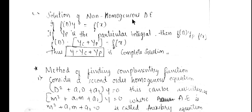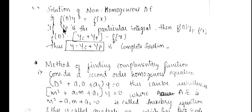While solving examples you will know exactly what the complementary function is and how to find the roots. For the non-homogeneous case, if f(D)·y = φ(x), and yp is the particular integral such that f(D)·yp = φ(x), then the complete solution is y = yc + yp, where yc is the complementary function and yp is the particular integral.